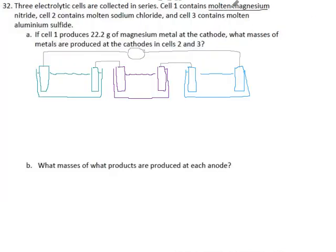They say cell number one contains magnesium nitride, so magnesium ions and nitrides. Cell 2 contains sodium chloride. There's the sodium, there's the chlorine, and finally we get aluminum sulfide.